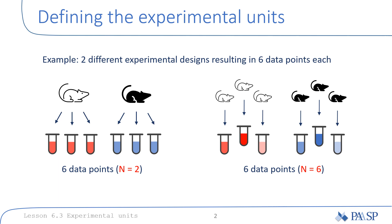In general, we can conclude that multiple observations on each mouse provide increased precision for estimating the true mean for that mouse, but does not directly provide increased precision for estimating the population mean in the way that increasing the number of mice does.